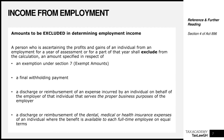The next exclusion is a discharge or reimbursement of dental, medical, or health insurance expenses of an individual, where the benefit is available to each full-time employee on equal terms. This is very crucial. Where your employer reimburses dental, medical, or health insurance expenses, it may be excluded from your income tax — on the condition that every full-time employee in the company gets this benefit. If there is discrimination — for example, junior staff do not get it but senior staff do — this exemption does not apply. It only applies where everyone gets it on an equal basis as full-time employees.